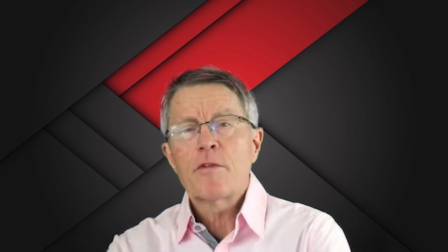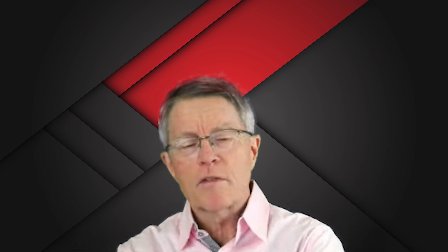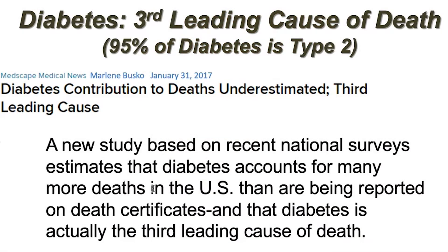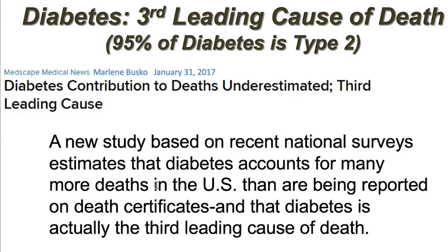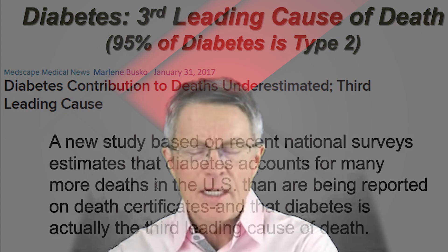I wanted to cover a couple of quick other points about the prevalence of diabetes. There's one study reported a couple of years ago saying diabetes is actually the third leading cause of death, and of course 95% of diabetes is type 2 — the type we tend to get as we get older or more obese. This new study was reported in Medscape Medical News, and the point was that diabetes contributions to death were underestimated.